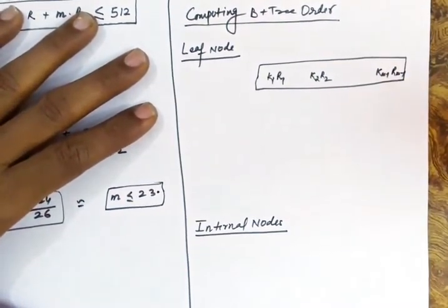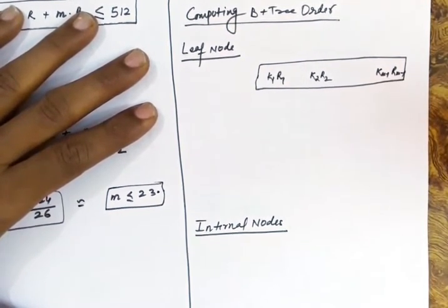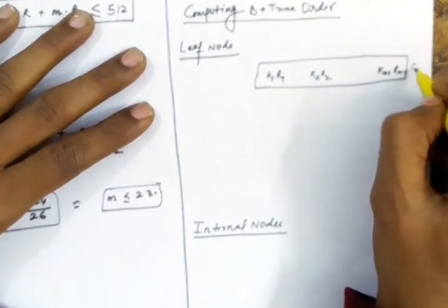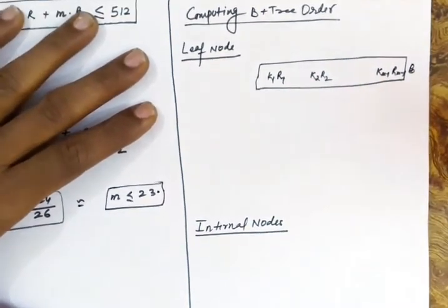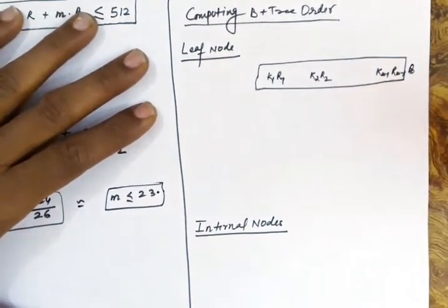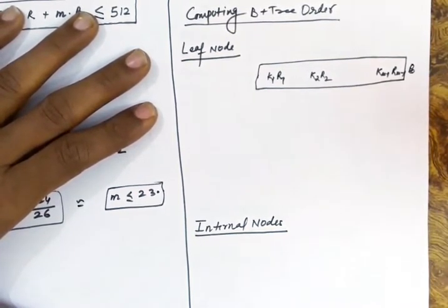We link up every leaf node with each other, which means we need to have the address of the next node. The address of the next node is the address of a block, since each node is going to be stored in a hard disk block. So if we are referring to the address of the next node, that is a block address.